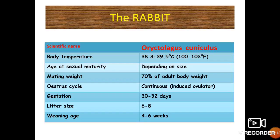Rabbits come under the family Leporidae and its scientific name is Oryctolagus cuniculus. Normal body temperature range is between 38.3 to 39.5 degrees Celsius. Age and sexual maturity depends on the size and the mating weight is 70% of adult body weight. Estrous cycle is continuous and rabbits are induced or spontaneous ovulators. Gestation period is 31-32 days and litter size is 6-8. Weaning age is 4-6 weeks.